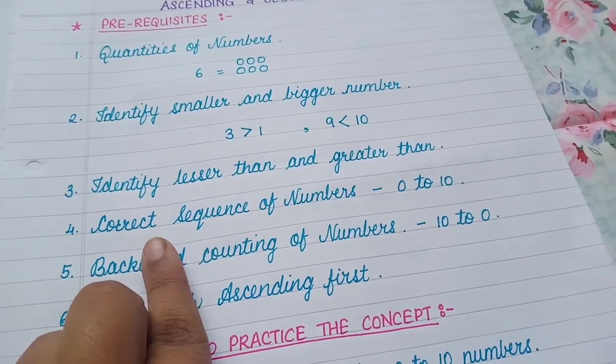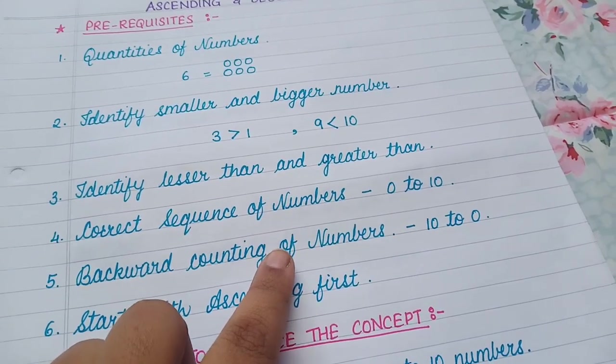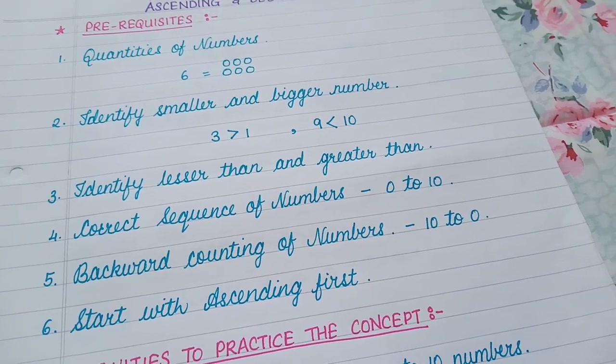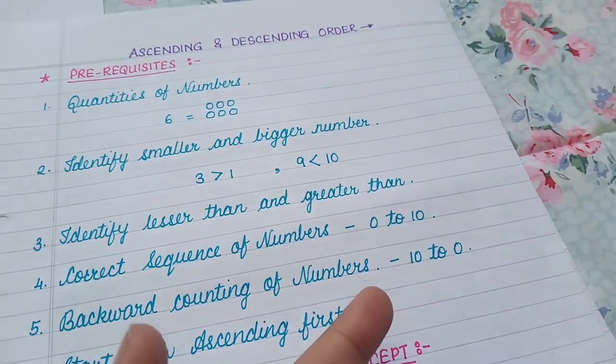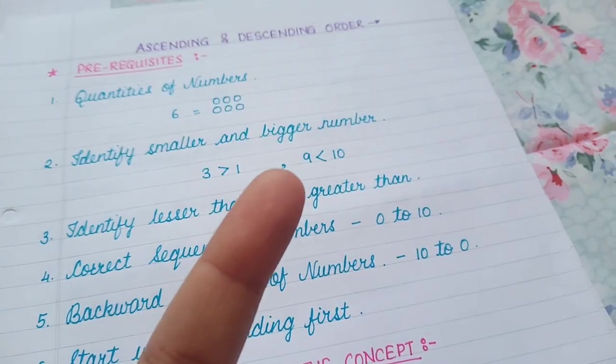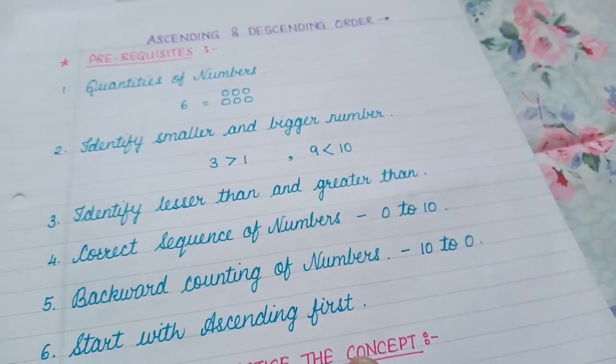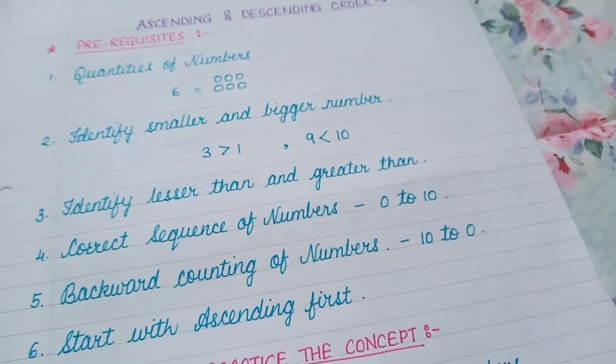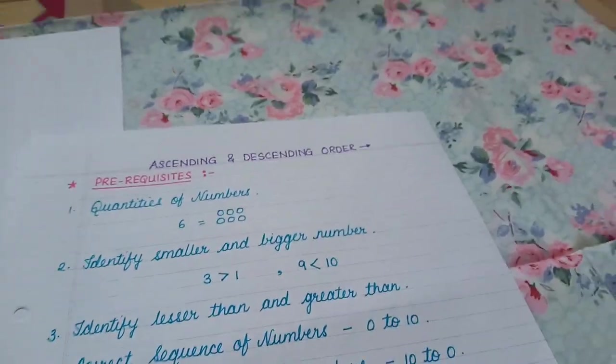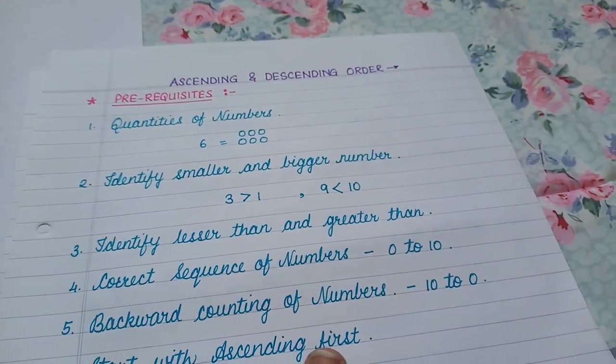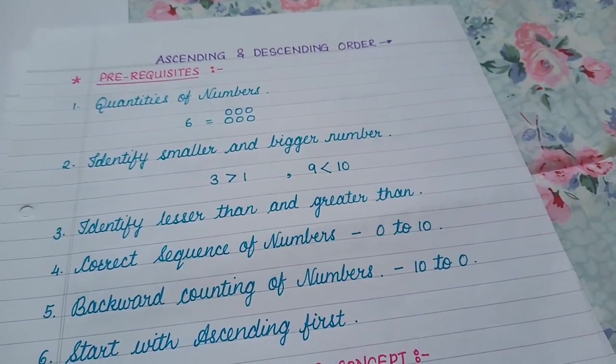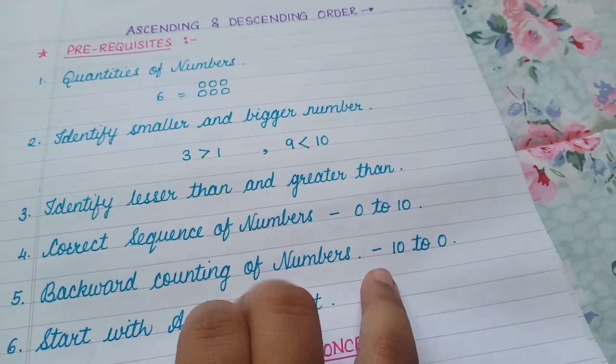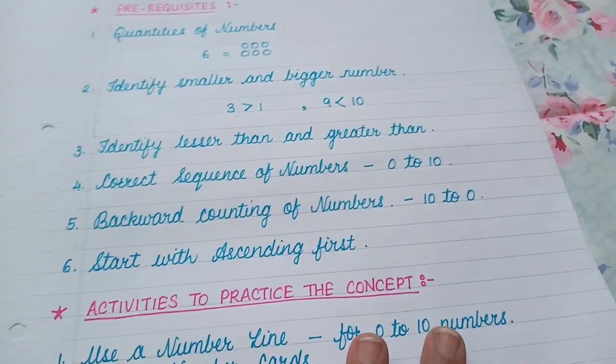The fourth one is correct sequence of numbers. Obviously, the child should know the correct sequence of numbers to write the correct order. Sequencing is order, right? So to understand ascending and descending properly, the child should be able to know the correct sequence of numbers in the correct way from 0 to 10 and as well as in the backward counting from 10 to 0.